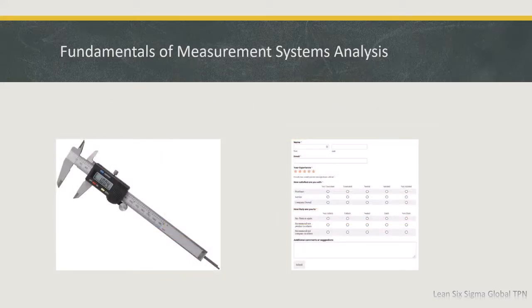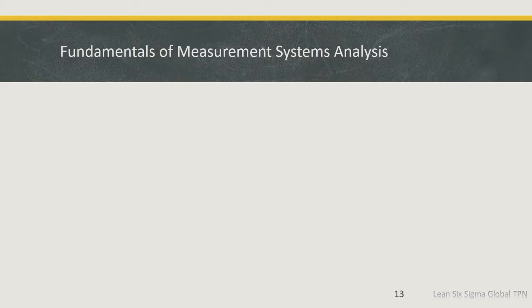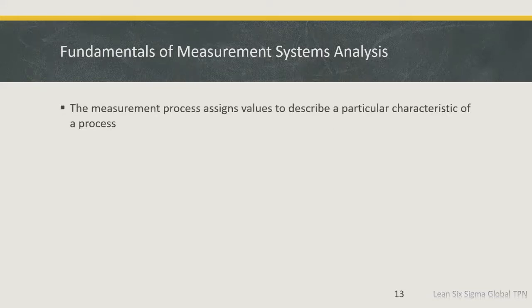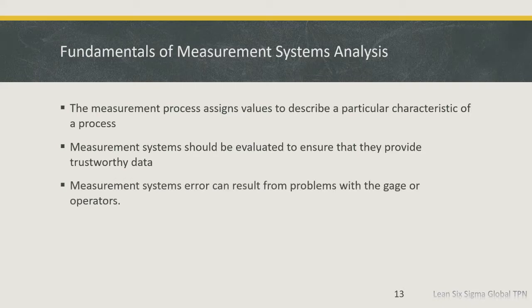In this chapter, we will learn how to evaluate the quality of different measurement systems. We will use a gauge repeatability and reproducibility, or gauge R&R study, to evaluate measurement systems that produce continuous data. We will also use attribute agreement analysis to evaluate measurement processes that produce attribute data. A measurement process assigns values to describe a particular characteristic of a process. Measurement systems should be evaluated to ensure they provide trustworthy data. Measurement errors can result from problems with the gauge or operator.